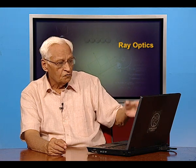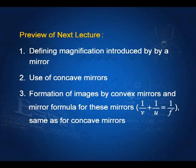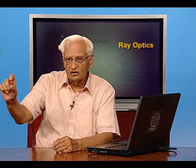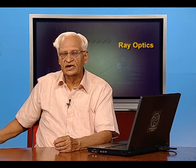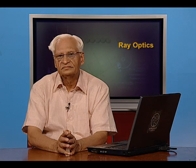In the next lecture, we shall continue with the study of the convex mirror, define terms like magnification, and explain what is known as the field of view — and why in scooters and cars we have convex mirrors by the side of the driver. We shall see why there is a warning written on those mirrors: that the actual object may be nearer than you think it is.